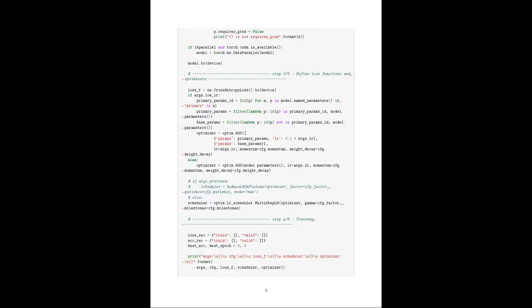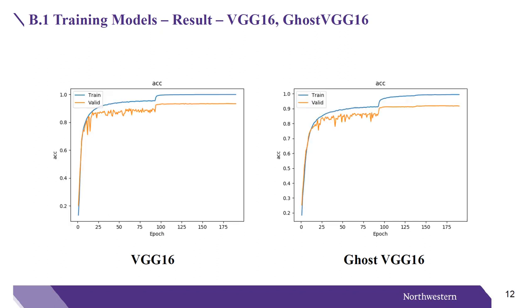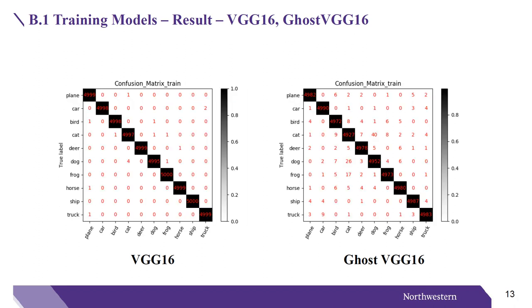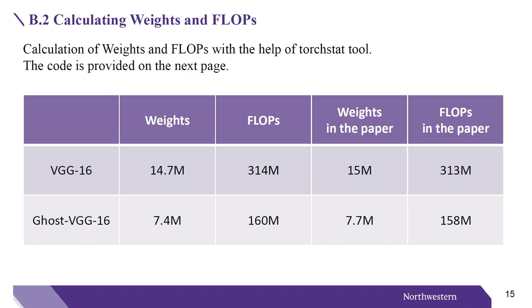Running the models, we present graphs comparing each of them. The first is the loss function comparison, the second is the accuracy comparison, the third is the training confusion matrix comparison, and the last is the validation confusion matrix comparison. We find that there is no significant decrease in accuracy after using GhostNet, which is consistent with the paper. For the other part of the experiment, we calculate weights and FLOPs using the Torchstat library. After using Ghost, weights and FLOPs basically drop to half of their original size, which is in line with the paper.